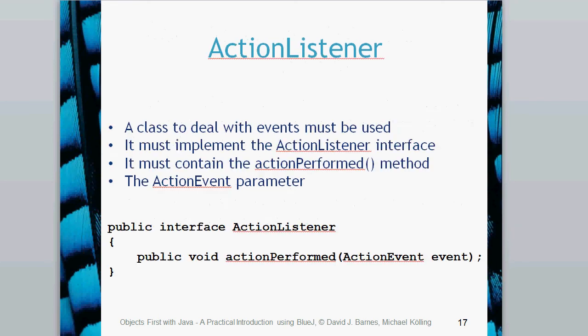Whichever method you're going to use — and we're going to discuss three — in terms of listening to any actions pressed or done on the GUI, you need to use an action listener. The class must implement the action listener interface to be able to listen for certain actions. It has to contain the action performed method, which is inherited from the action listener interface. The action performed method has an action event parameter, and the action performed — i.e. a click of something — will be captured in that event, along with some information around it.